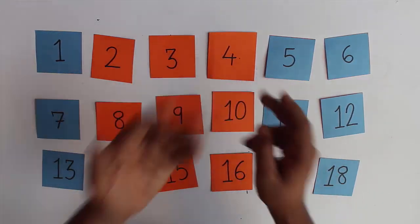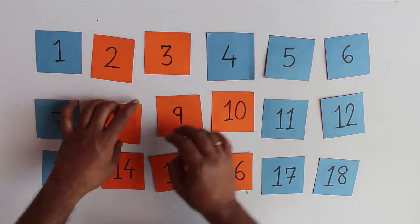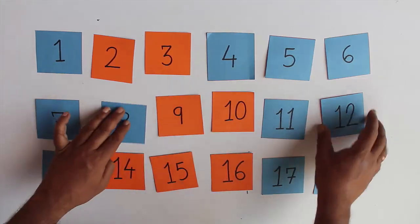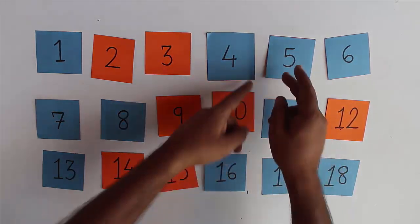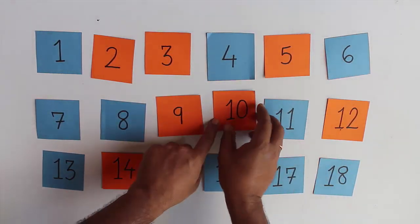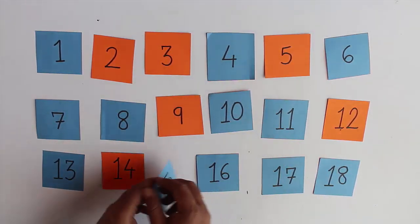Now we will turn every fourth card: 4, 8, 12, 16. And now we will turn every fifth card: 5, 10, 15.